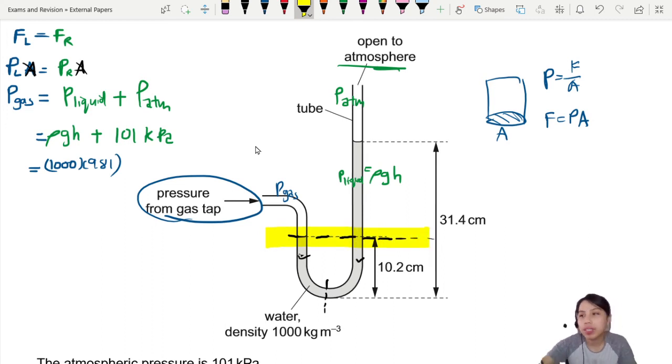How high is the column of water? We are using this level as our reference point because below that it's all the same. We want to look at this height, so you need to find out what is this height. That's going to be 31.4 minus 10.2.